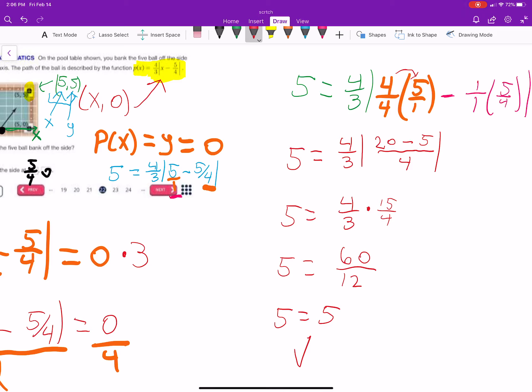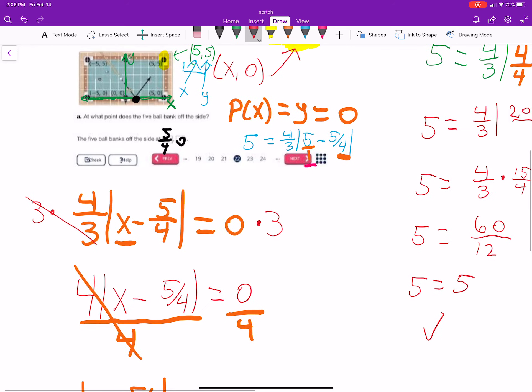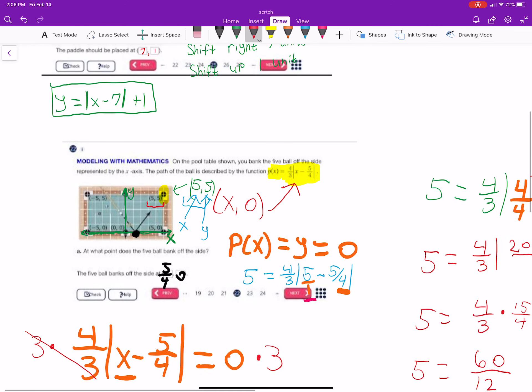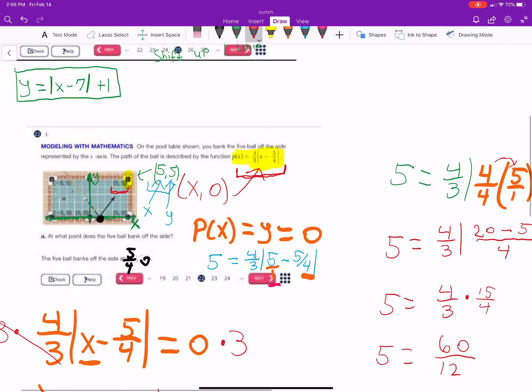Yes, the fact that we got a true statement, 5 equals 5, means that this coordinate point, 5 comma 5, which is where the hole is, is included in our function. So, because of that, that means this absolute value function will go into the pocket.